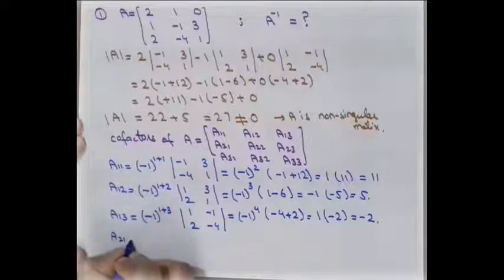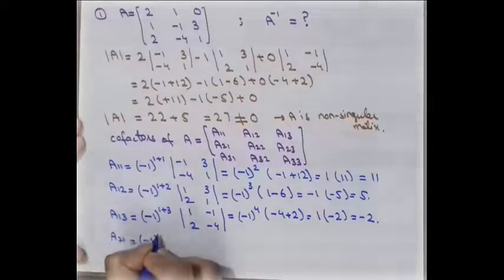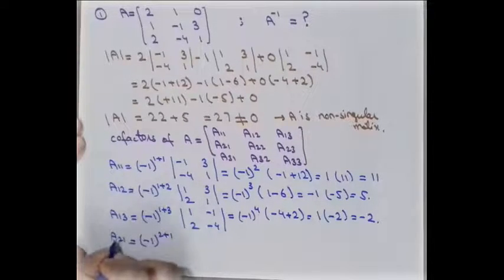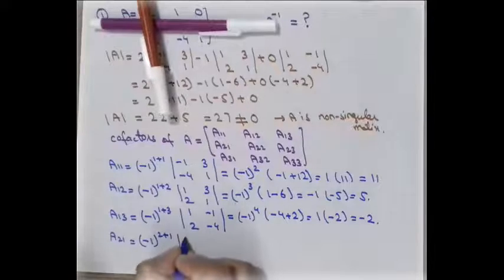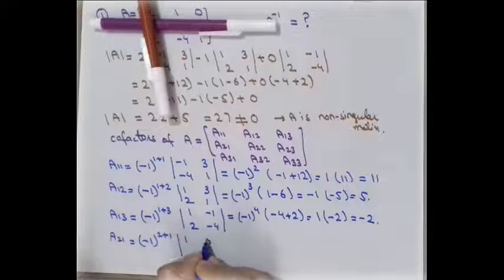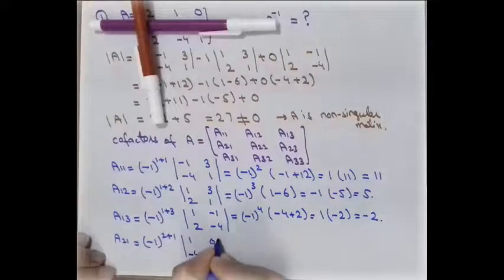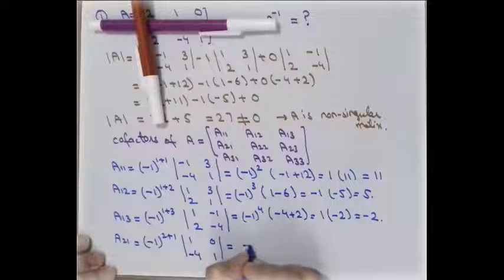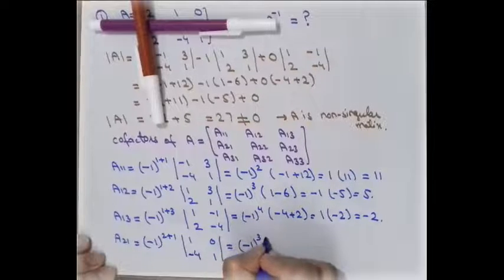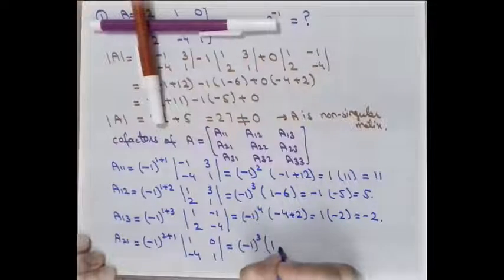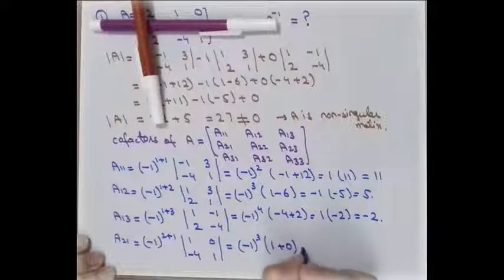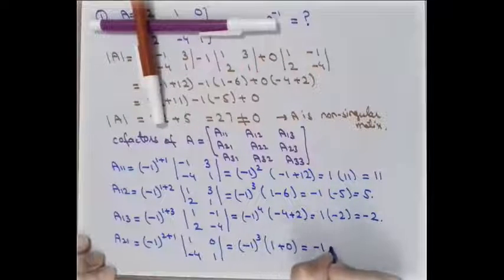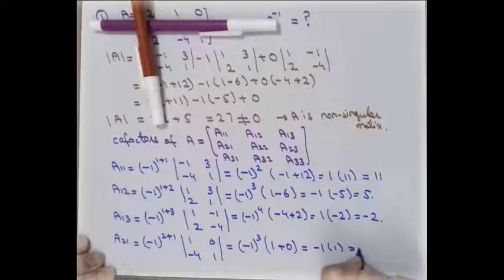For A21, with i+j = 2+1 = 3, we remove the corresponding row and column, leaving four elements: 1, 0, -4, 1. The determinant is 1 + 0 = 1. Since the power 3 is odd, (-1)^3 = -1, so A21 = -1 × 1 = -1.